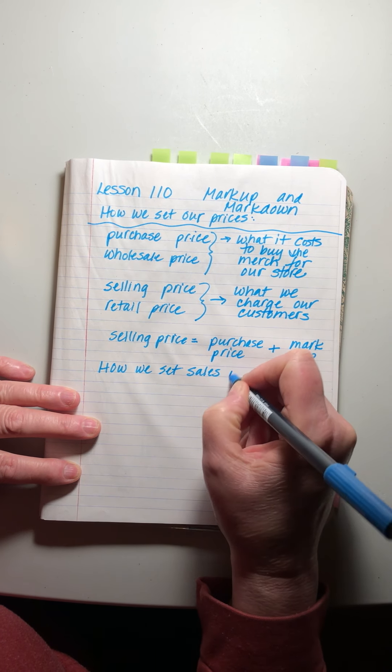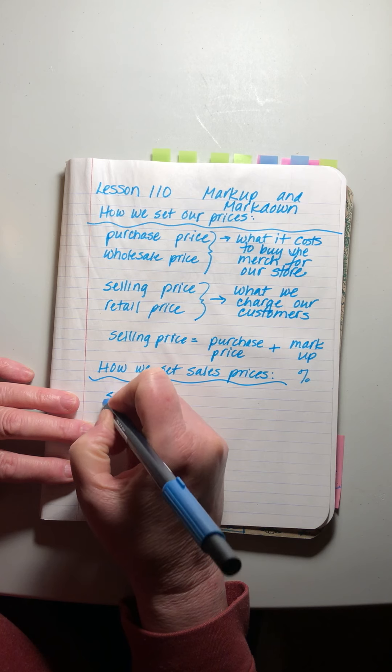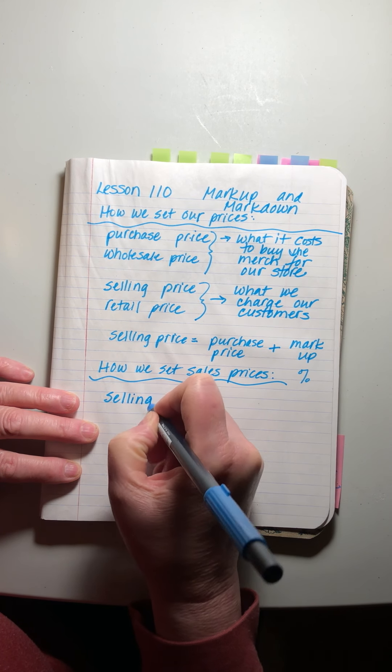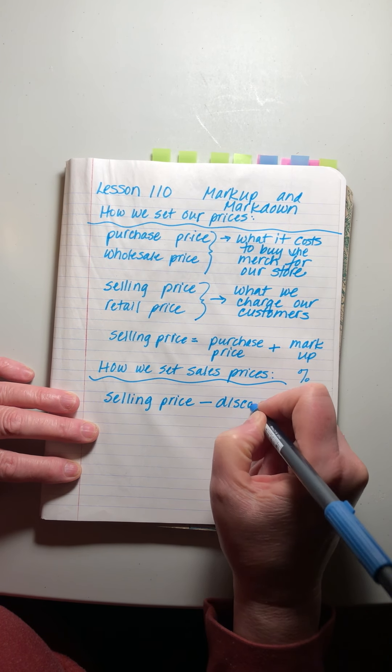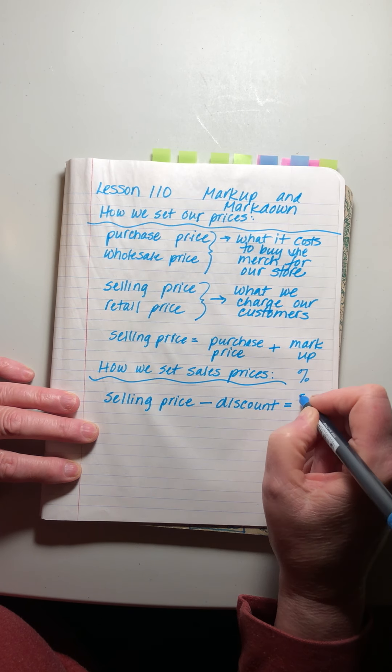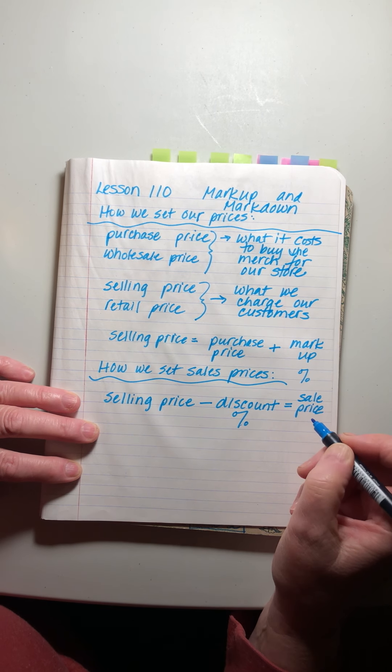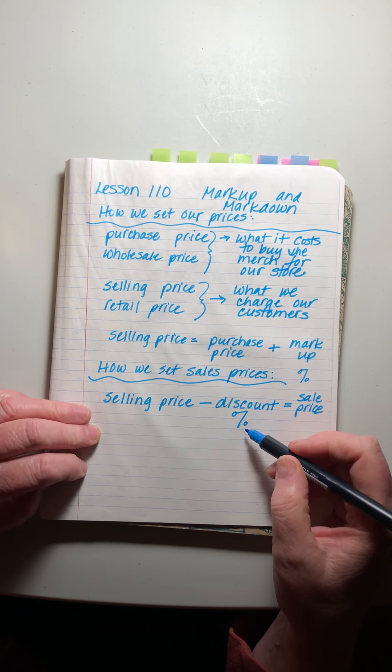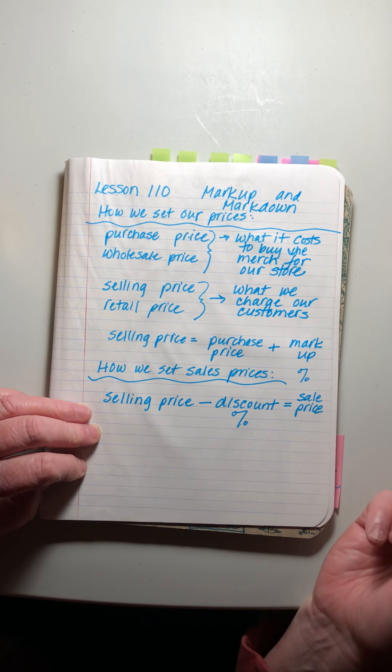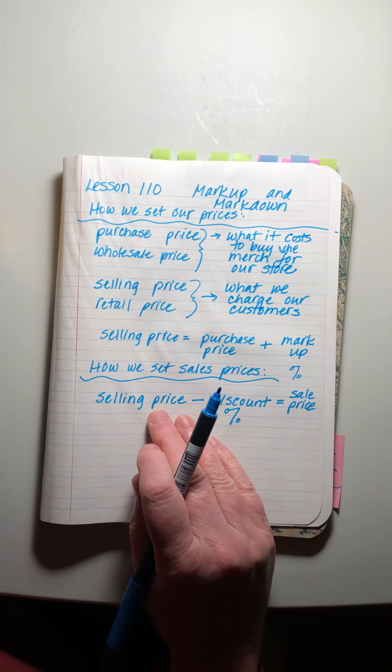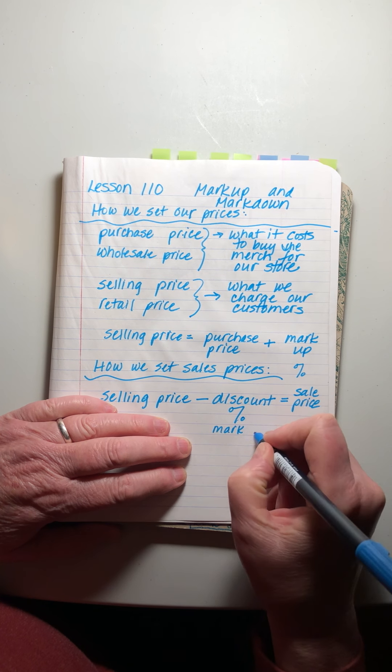So sometimes we have sales, and this is how we do our sales prices. We take the selling price and we subtract what we call a discount, and that will equal the sale price. This, as you know if you've shopped, is usually a percent too - take 40% off all tops on this rack, 60% off all jeans. Sometimes the discount is called the markdown.